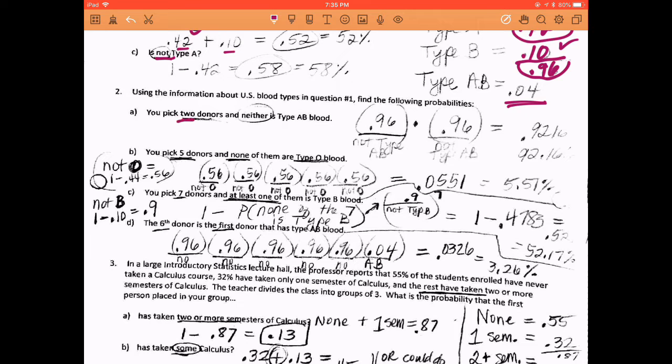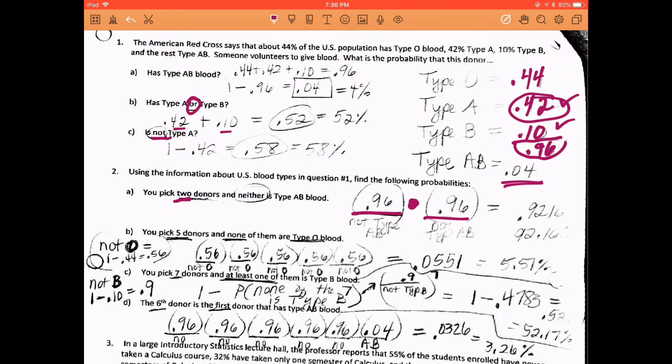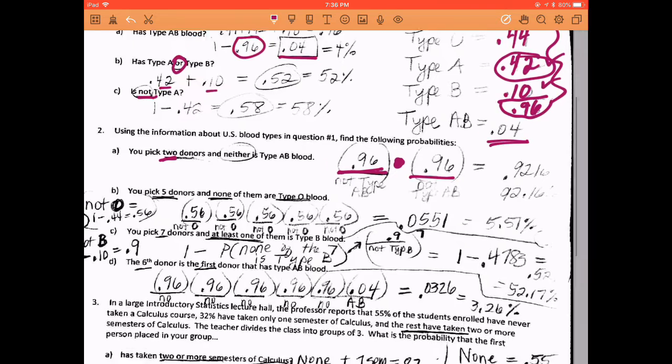Alright, number two. You pick two donors, so you have two events. And neither of them is type AB. So you have the first one is not type AB and the second one is not type AB. We know from the first question that's 0.96 for not type AB and 0.96 for not type AB. So that's how you get your 92.16% overall.